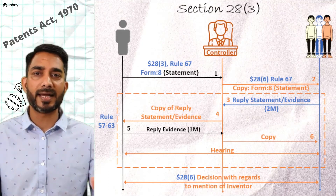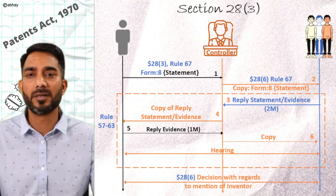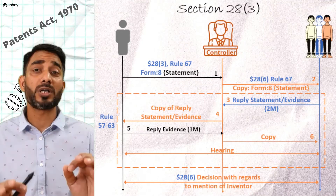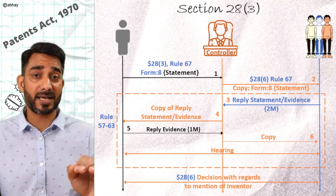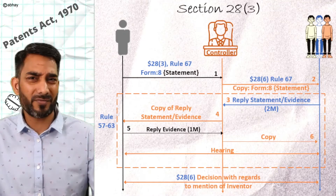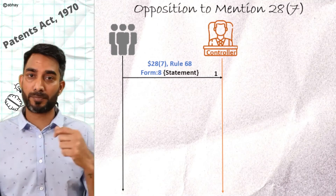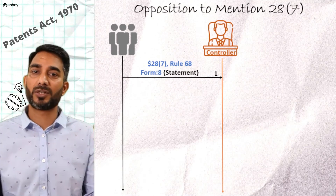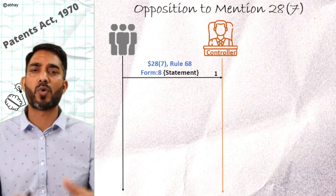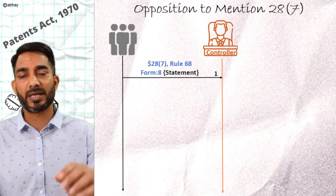With this we have discussed cases where a claimant, either with or without the support of an applicant, can get his name mentioned as inventor in the patent application. Once such a mention of inventor has happened, there is quite a possibility that others may not agree with the decision of the controller and may want to oppose the fact that such a person has been mentioned as inventor. They may want to oppose the decision, and as per Section 28.7, they can approach the controller by putting up a request in Form 6 as per Rule 68, providing details on why they think that person should not be named as inventor.